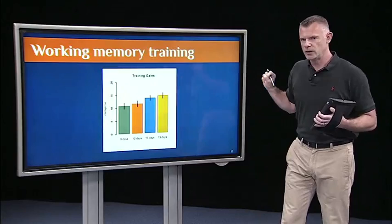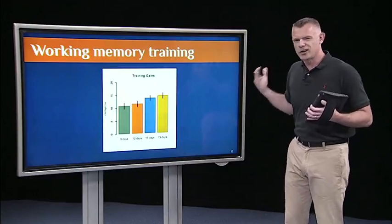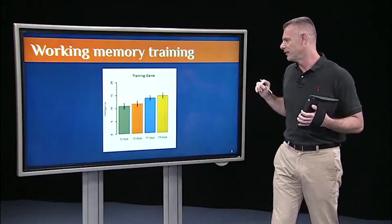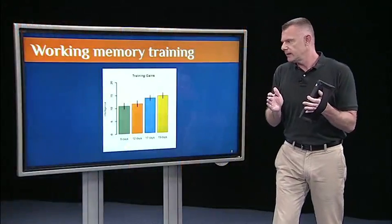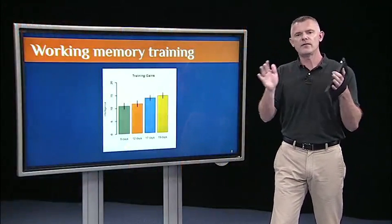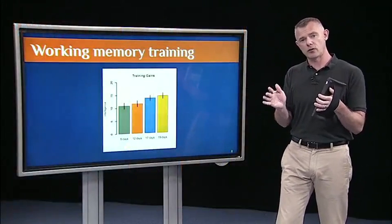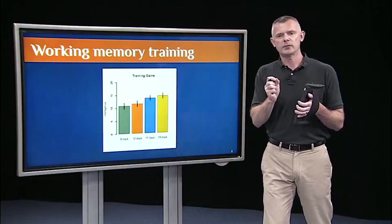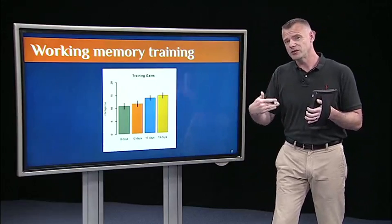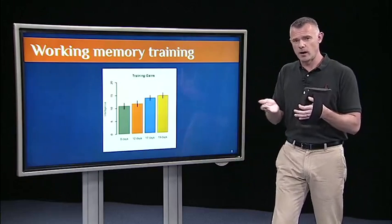We looked at these results before — these are the same fake data we generated, which look a lot like data from the real experiment. There's a little bit of an increase. When we did the t-tests, this comparison was not significant, nor was this one, but all the others were significant. What an ANOVA will do is tell us, first of all, is there an effect overall — is there an effect of training condition across these four groups? Is there a significant difference somewhere? That's what the F-ratio will tell us. Then we'll engage in post-hoc tests to figure out exactly where the significant differences are.